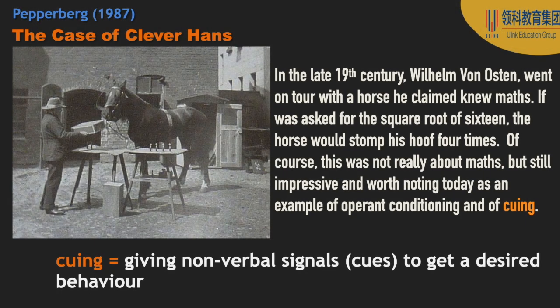There's a famous example from the 19th century of a horse called Clever Hans who could apparently do math — you'd ask him the square root of 16 and he'd stomp his hoof four times and stop. But apparently what was happening was the person asking the question knew the answer and would give it away by acting delighted once the correct number was reached. The horse was responding to body language rather than the actual math question — still impressive intelligence, just not in the way people thought.